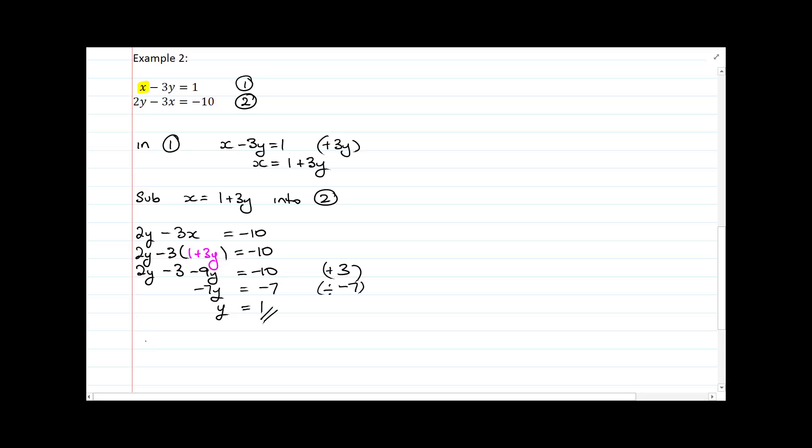And I'm going to sub y equals 1 into equation number 1. This version here, where I've already got x by itself, to find my x value. So I have x is equal to 1 plus 3y. And so x is equal to 1 plus 3 times 1, and that of course is equal to 4. So I've got x equals 4 and y is equal to 1.